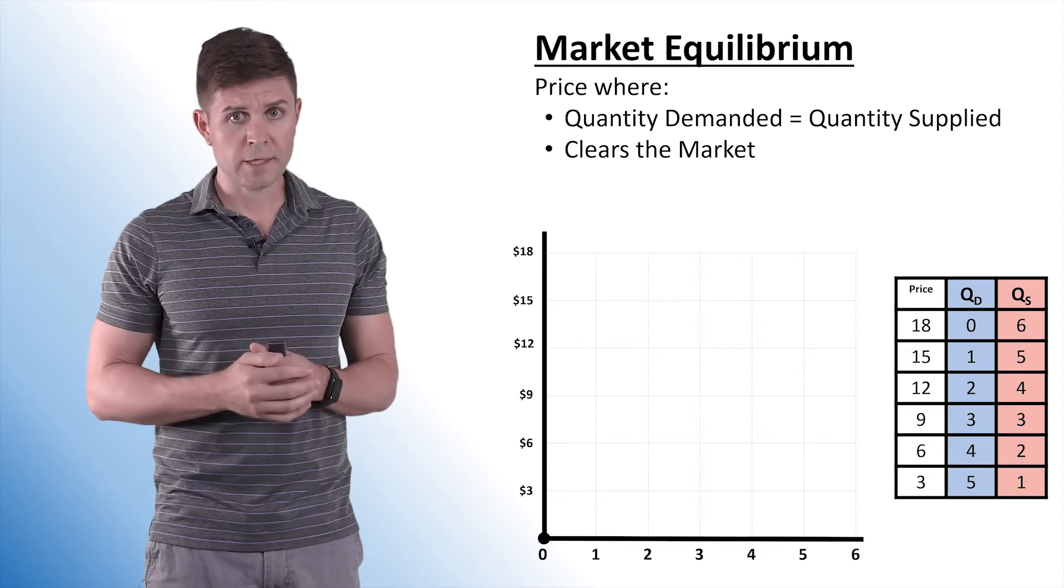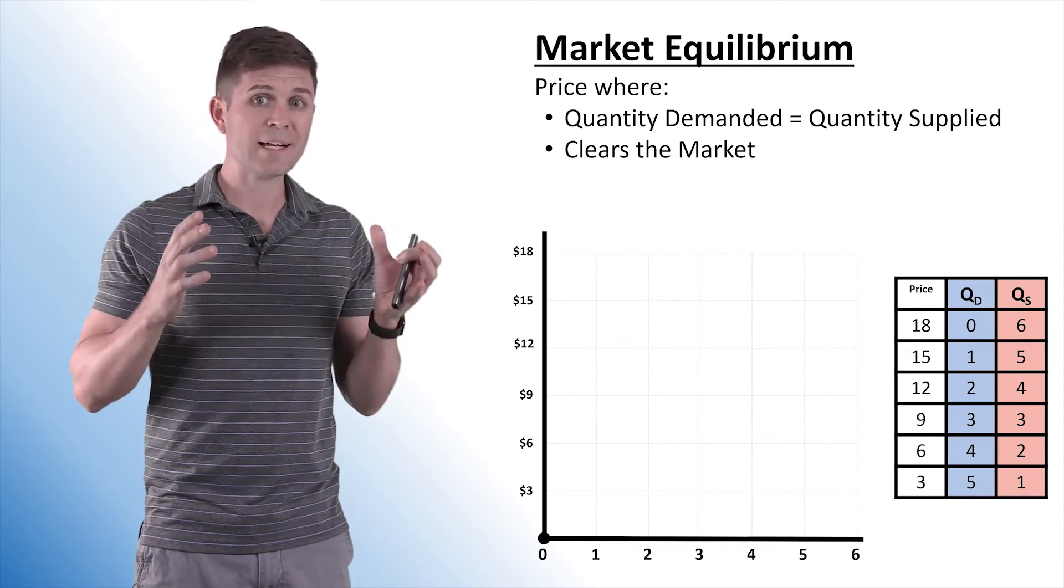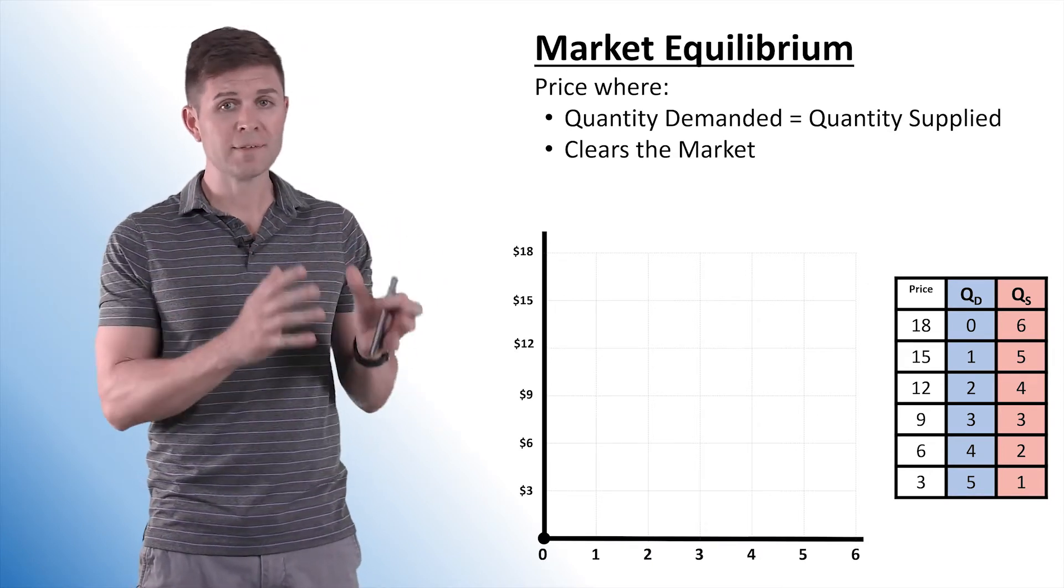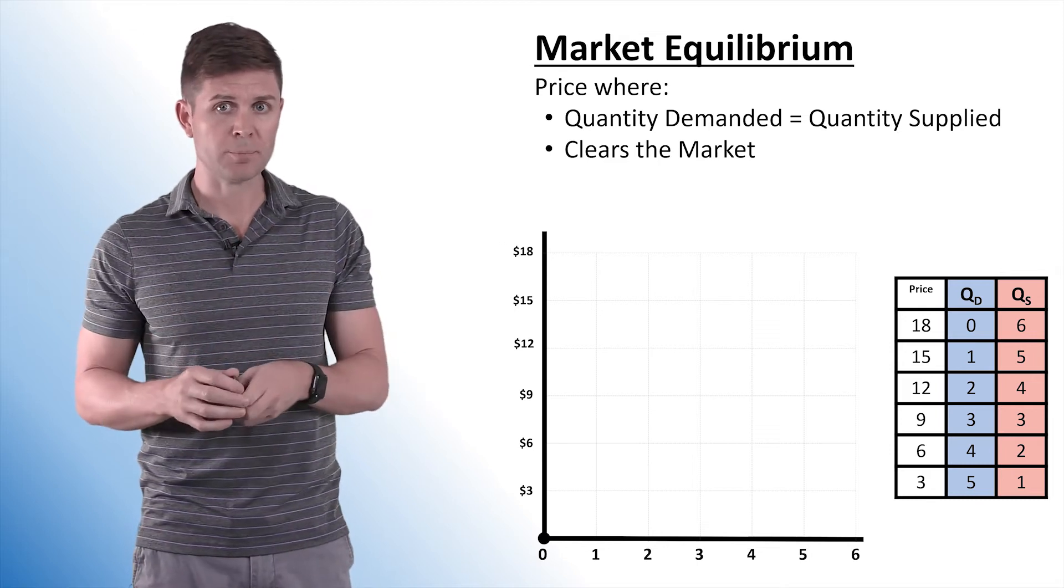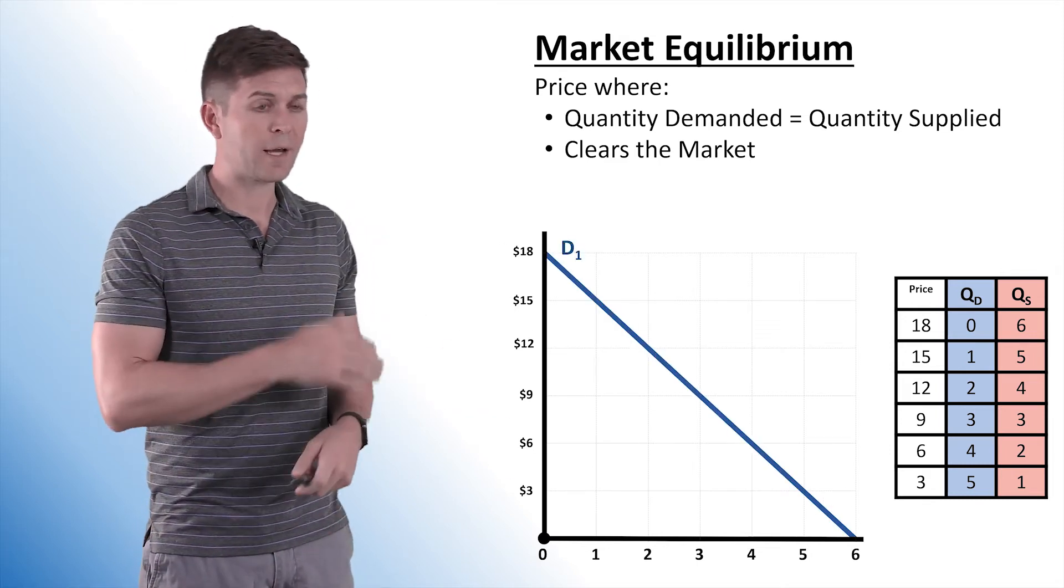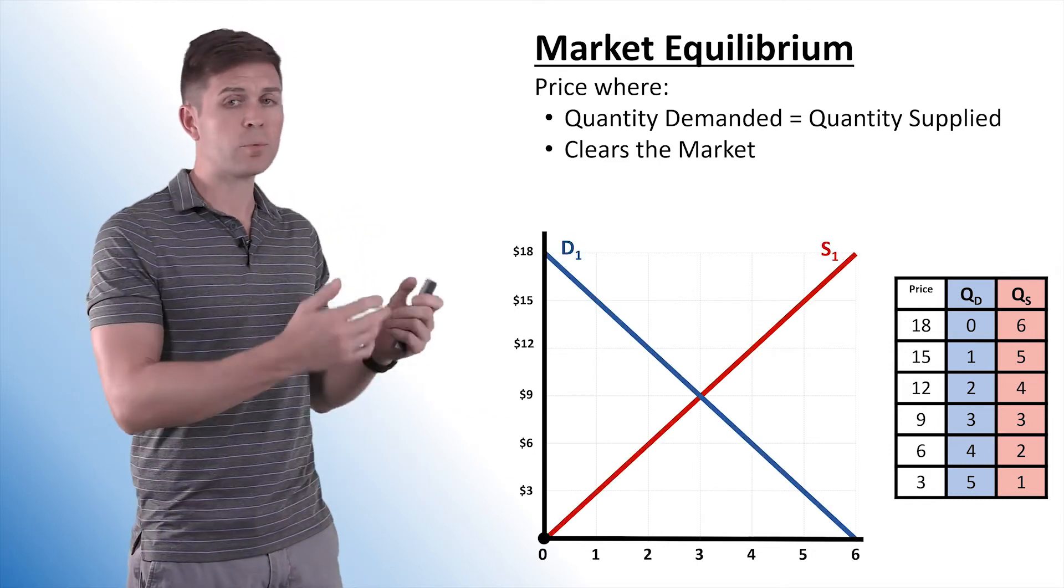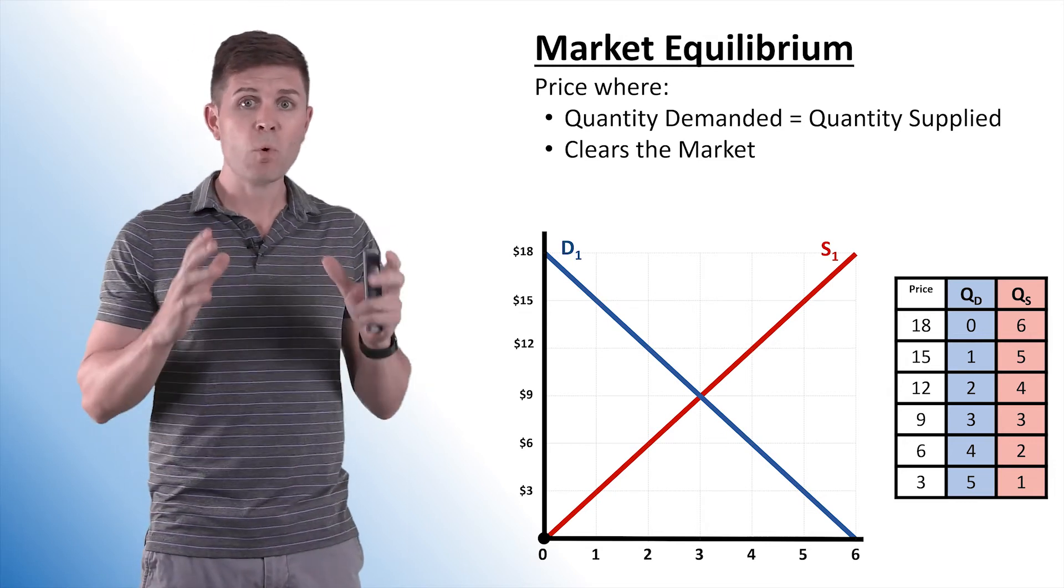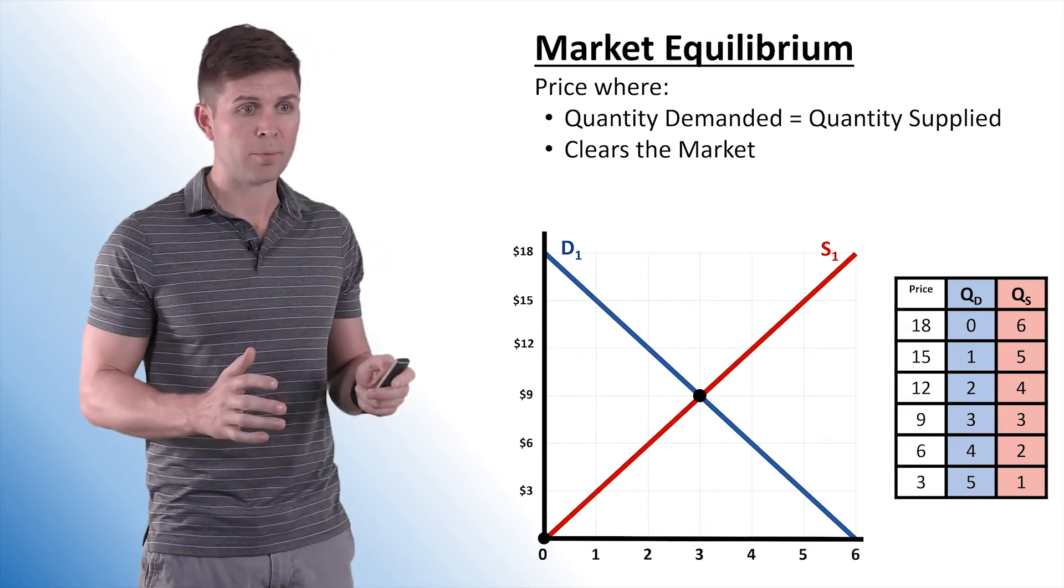Markets are always trying to get to their equilibrium. It is the price that clears the market. It's where quantity demanded equals quantity supplied. So let's take a look at this model. We got our downward sloping demand curve. We got our upward sloping supply curve. The point at which they intersect one another is our equilibrium.